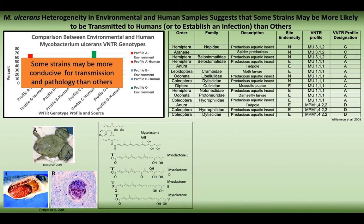We also published in PLOS One in 2014 that we found a VNTR genotype of M. ulcerans from a swab sample collected from a Buruli ulcer patient that was culture negative. When we isolated the DNA from that swab, it had a mycolactone-producing mycobacterial profile that matched one for a mycolactone-producing M. marinum or pseudoshotzii strain — a profile other than M. ulcerans. This is important because we don't know whether these other mycolactone producers are infective to humans.